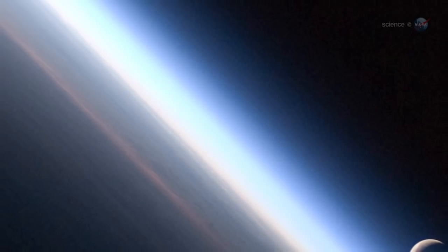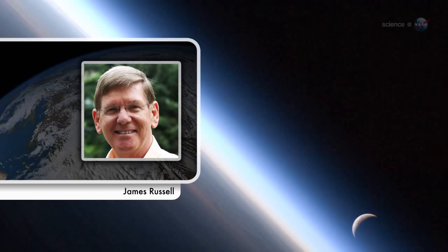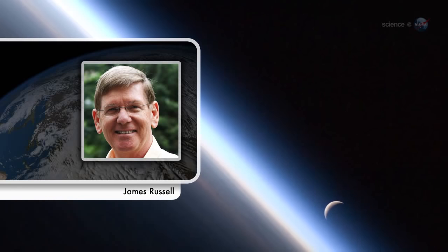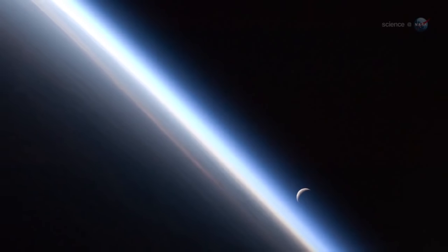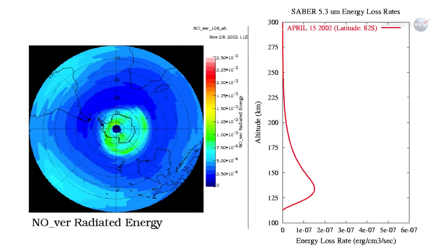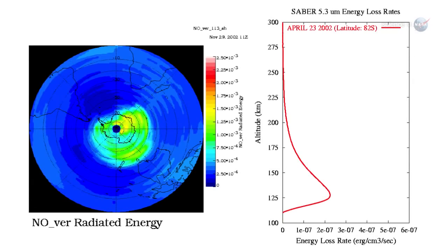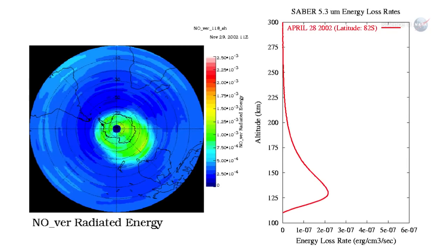Carbon dioxide and nitric oxide are natural thermostats, explains James Russell of Hampton University, SABER's Principal Investigator. When the upper atmosphere, or thermosphere, heats up, these molecules try as hard as they can to shed that heat back into space.